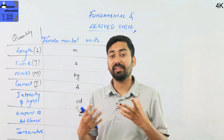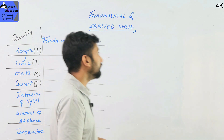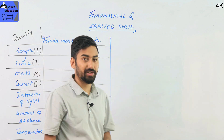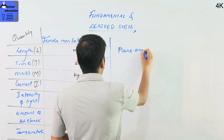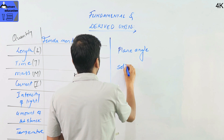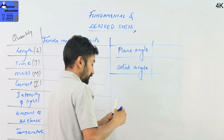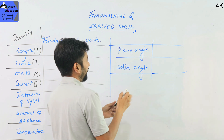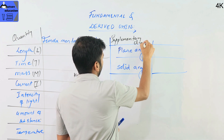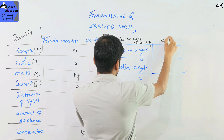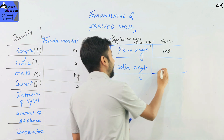We can also use the solid angle or supplementary units. Supplementary units include supplementary physical quantities. We can use the plane angle and the solid angle. The plane angle is the radian, spelled r-a-d-i-a-n. The solid angle uses the steradian, symbol SR.